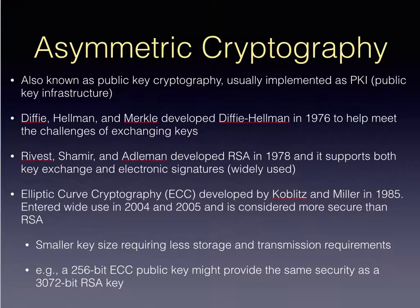Asymmetric cryptography is also known as public key cryptography and is usually implemented as PKI. The first iteration was created by Diffie, Hellman, and Merkle in 1976. Rivest, Shamir, and Adleman developed RSA in 1978, which supports both key exchange and electronic signatures, whereas Diffie-Hellman is just a key exchange algorithm. Emerging today and stronger than either is elliptic curve cryptography — it uses a smaller key, requires less storage and transmission, and a 256-bit ECC public key provides the same security as a 3072-bit RSA key.